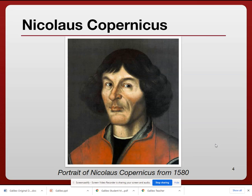We need to talk about Nicholas Copernicus. He was a medieval scientist who challenged the geocentric idea. He believed that the sun was the center of the universe, and he knew how radical his theory was. He wrote a book about it, but he did not publish it until his death because he knew the church would be after him. But he started the ball rolling, and many scientists that came after him referred back to his work about the heliocentric model.